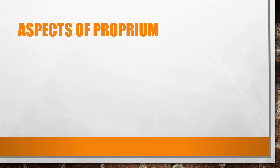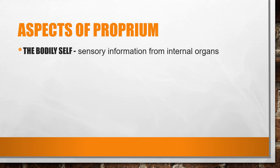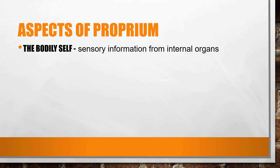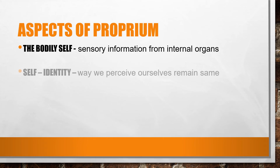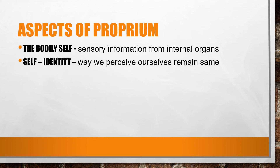The various aspects of proprium are: The bodily self, which is seen in infancy. Infants continuously receive sensory information from their internal organs, and the sensation helps in self-awareness. Self-identity develops during the first 18 months of life. Despite the vast changes that occur in our lives, there is something that remains the same — for example, the way we perceive ourselves.